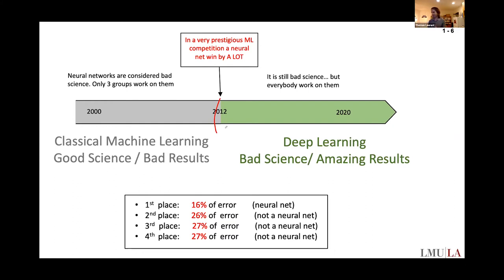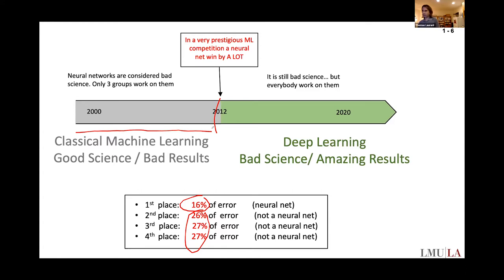In 2012, for the first time, people started using GPUs and large amounts of data. There was a huge machine learning competition called the ImageNet competition. 2012 was the first time one of these three groups doing this so-called bad scientific idea — deep learning — used a GPU and bigger amounts of data, and they completely destroyed the competition. They obtained 16 percent error whereas everybody else was at basically 26 to 27 percent error. It was an earthquake in the community when this happened.